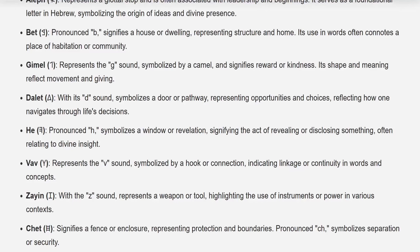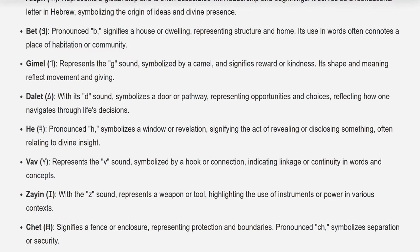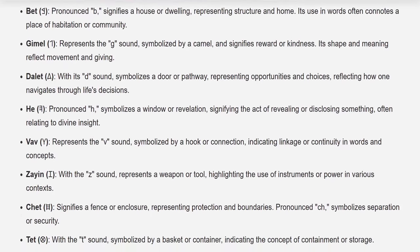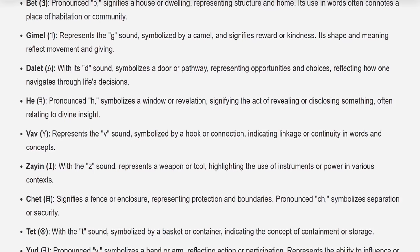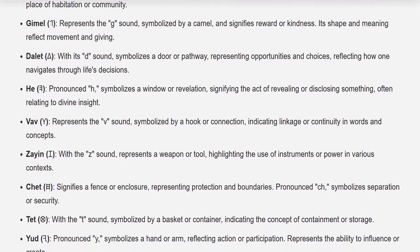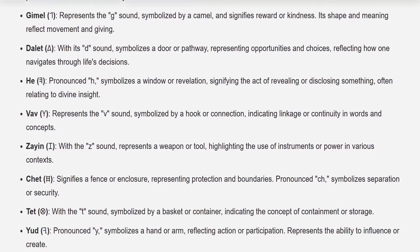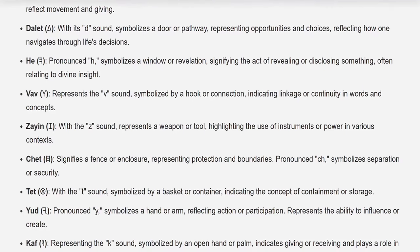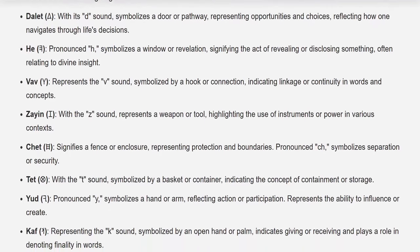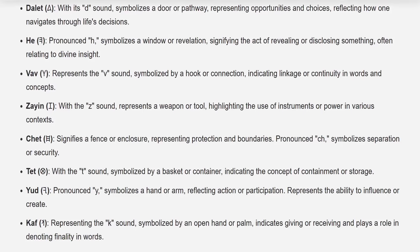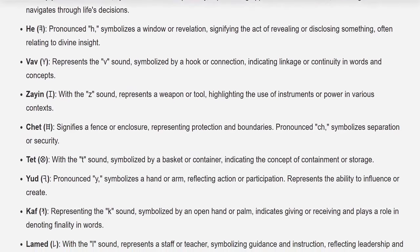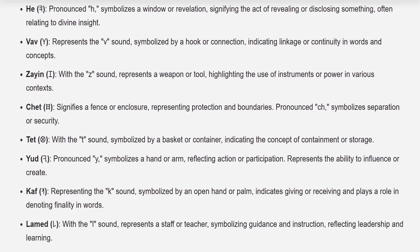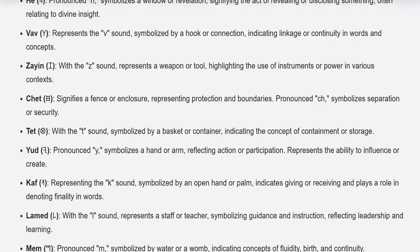He, pronounced H, symbolizes a window or revelation, signifying the act of revealing or disclosing something, often relating to divine insight. Vav represents the V sound, symbolized by a hook or connection, indicating linkage or continuity in words and concepts. Zayin, with the Z sound, represents a weapon or tool, highlighting the use of instruments or power in various contexts. Chet signifies a fence or enclosure, representing protection and boundaries; pronounced CH, it symbolizes separation or security.